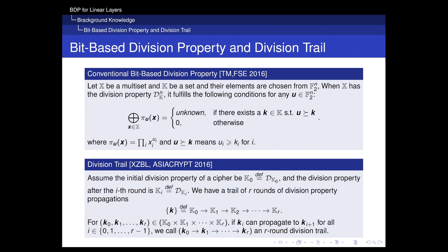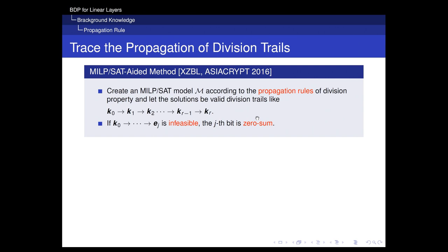To model the propagation of the division property, Xia et al. at ASIACRYPT 2016 proposed the conception of division trial. A sequence of vectors k₀, k₁, …, kᵣ is called a division trial if for every kᵢ it can propagate to kᵢ₊₁. An important topic in the division property is to model the propagation rules of these division trials.